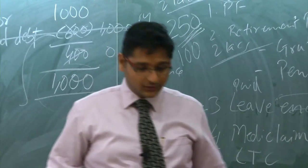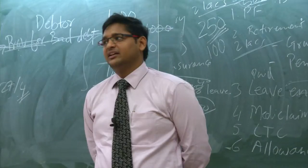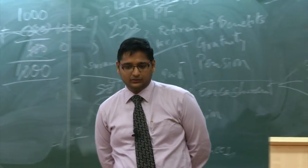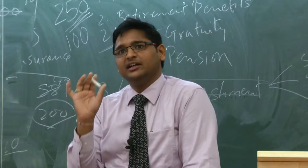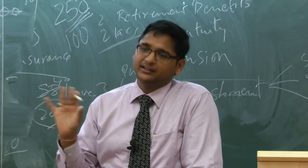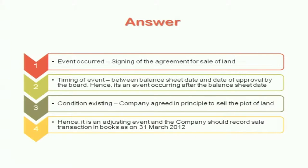Case study: A Limited agreed in principle to sell a plot of land on 18th March 2012 at a price determined by an independent valuer. Pending the valuer's report, the sale could not be completed by 31st March. The company received the valuer's report on 7th April 2012, the agreement was signed on 10th April, and financial statements were approved on 12th May 2012. Is this an adjusting event? Yes - conditions were existing. The sale of land had been entered into before 31st March; only the price was unconfirmed. Hence it is an adjusting event and the company should record the sale in the books as on 31st March.